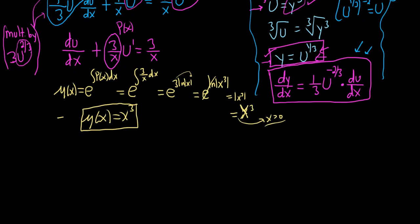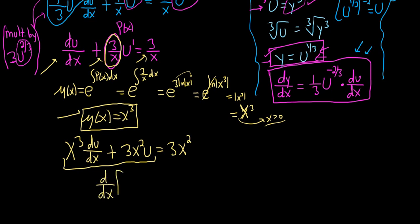So now we take the integrating factor and we multiply each term in our linear equation by x cubed. So we have x cubed du/dx. These are long problems. Plus x cubed times 3 over x, that's going to become 3x squared because one of the x's will cancel. Then we have our u. And then same thing here, 3x squared. The next step is to recall that this automatically always becomes d/dx, and it's always your integrating factor times your unknown function.